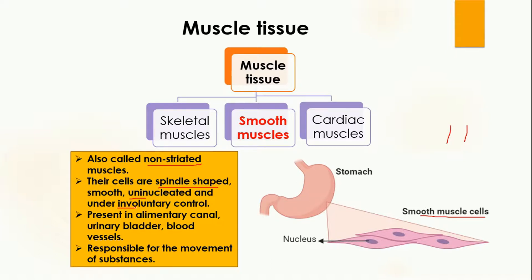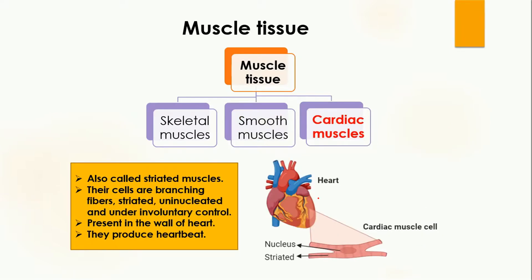The smooth muscles are under involuntary control, meaning you cannot control their movement — they move on their own or when the body requires it. These muscles are present in the alimentary canal, urinary bladder, and blood vessels. For example, in the stomach smooth muscles are present, so the movement of food along the alimentary canal is controlled by the smooth muscles.